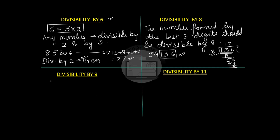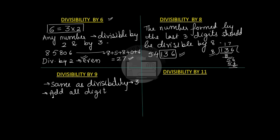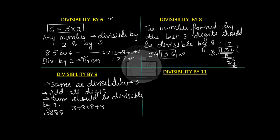Divisibility by 9 is very similar to divisibility by 3. Add all the digits, and the sum should be divisible by 9. For example, take the number 3888. Adding the digits: 3 plus 8 plus 8 plus 8 equals 27. Since 27 is divisible by 9, the number 3888 is divisible by 9.